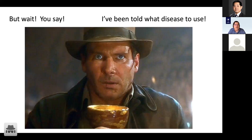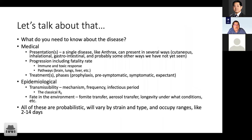What do you need to know about the disease? You need to know the medical presentation, the progression including fatality rate, the treatment phases, the pathways, and the immune toxic response. On the epidemiological side, you need to know the transmissibility, how it's transmitted, the frequency, the infectious period, fate in the environment, fomite transfer, transport through particles, aerosol transfer, longevity, and so on. All of these are variables, and if you look in the literature, there is very rarely something that gives you a solid take on what these numbers are.